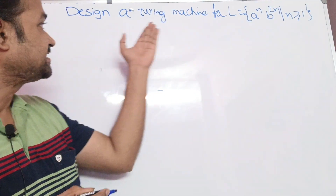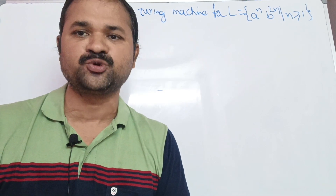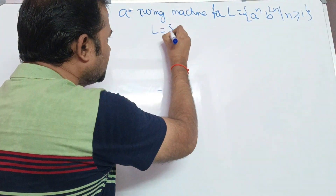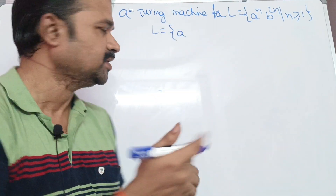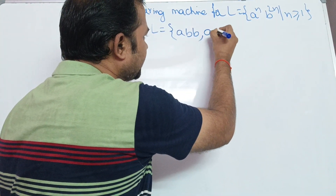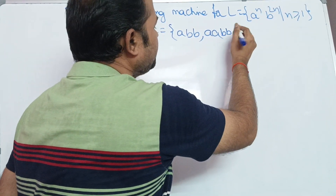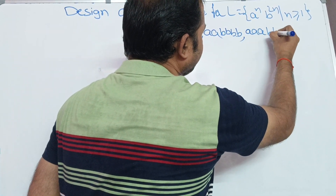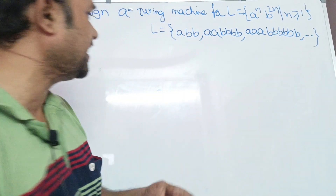Let's see this example: Design a Turing machine for L = A^N B^(2N), where N ≥ 1. So here the language is: if N=1, the string is A^1 B^2, that is 'ABB'. If N=2, then double A and 4 B's — A^2 B^4. If N=3, then 3 A's and B^(2×3) = B^6, so 6 B's. Likewise we can have N number of strings.